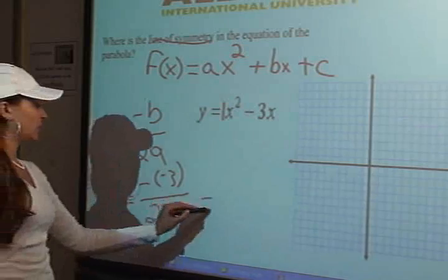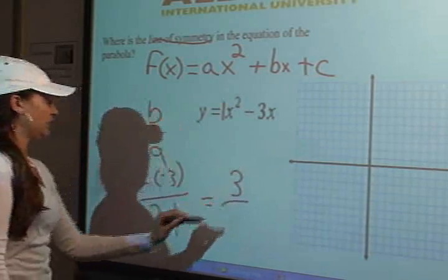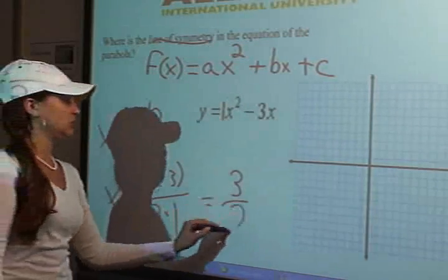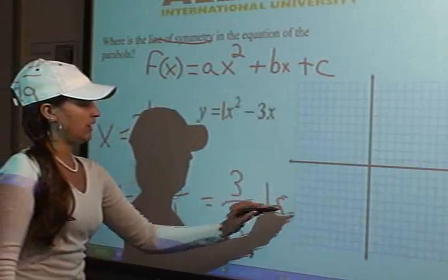So 2 times 1. That's going to give us positive 3 over 2 times 1 is 2 which equals 1.5.